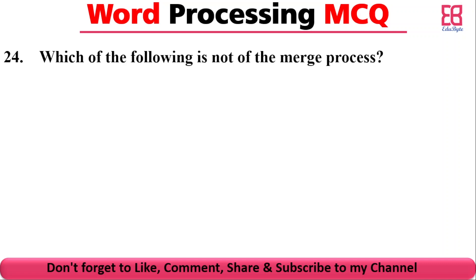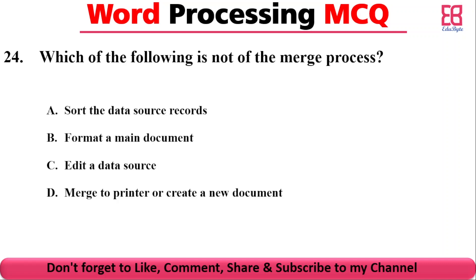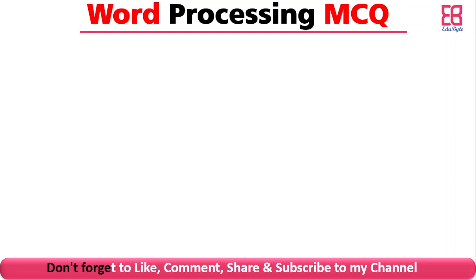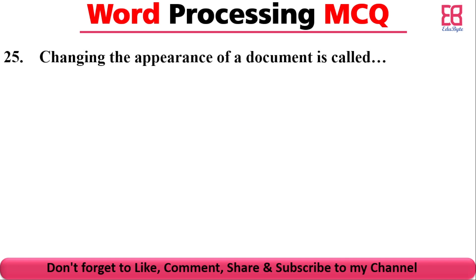Which of the following is not part of the mail merge process? Options include sorting the data source records, formatting the main document, editing the data source, and printing or creating a new document. The correct answer is sorting the data source records.